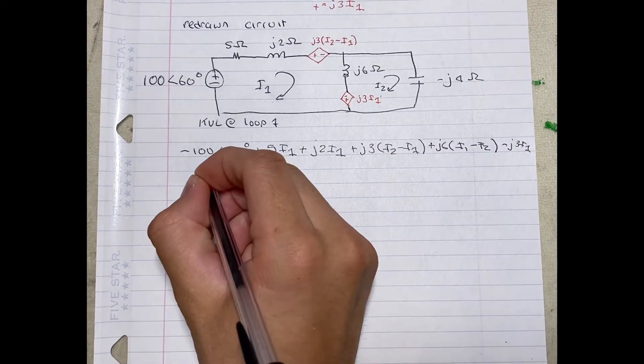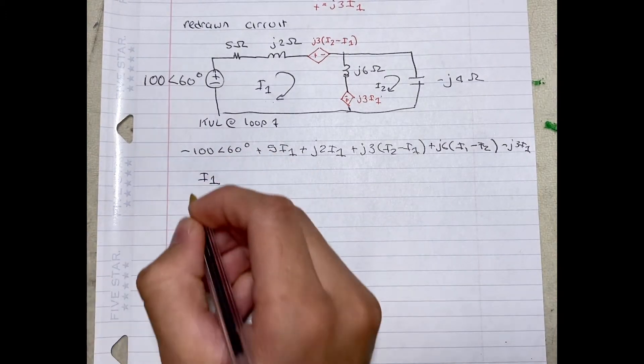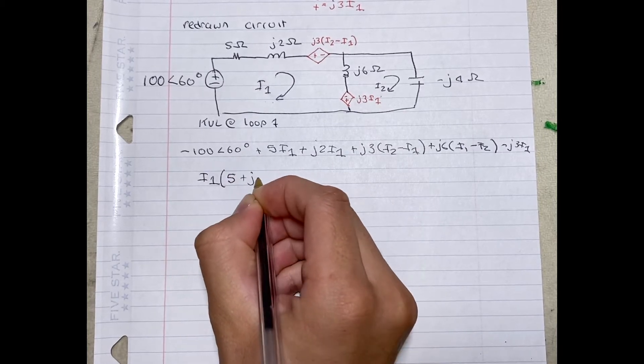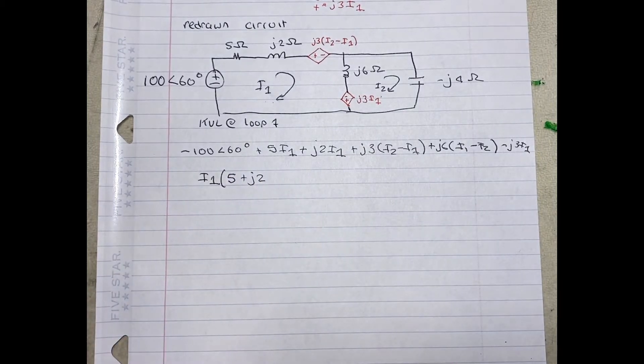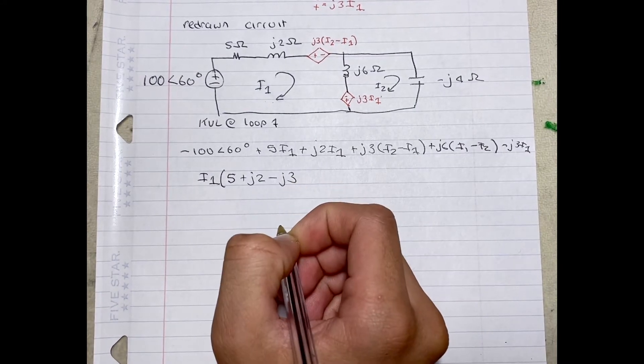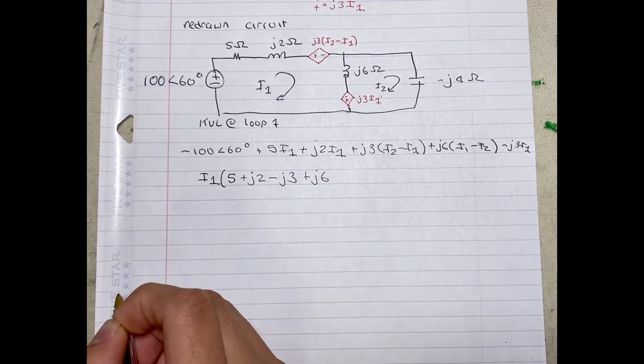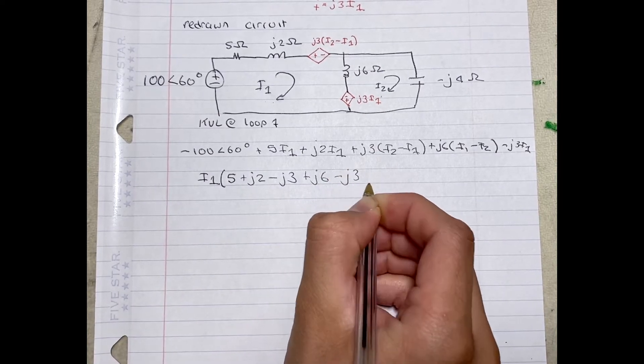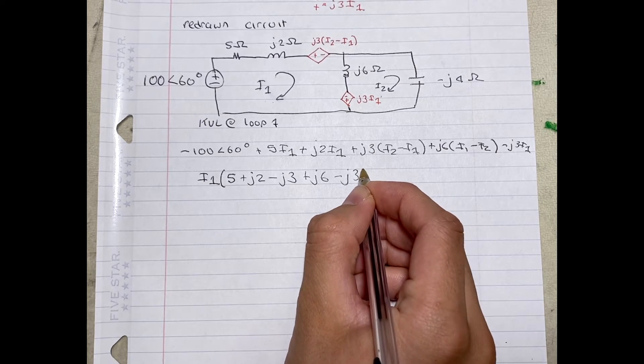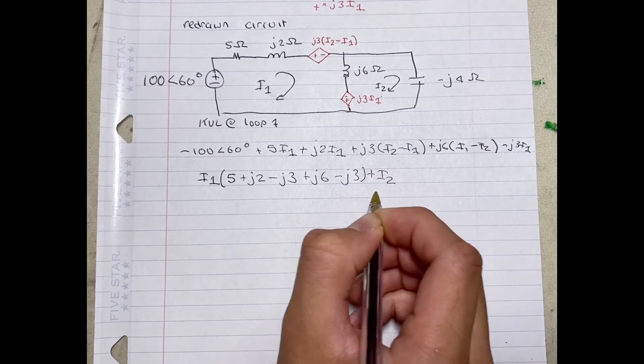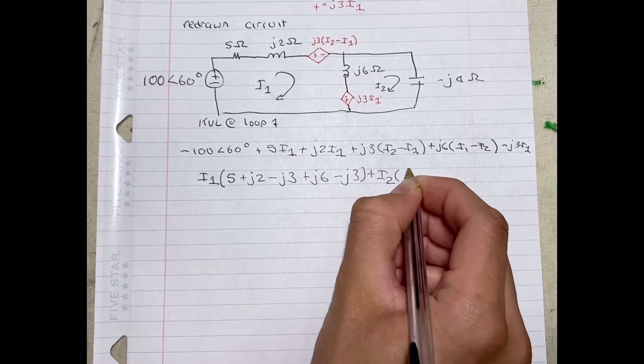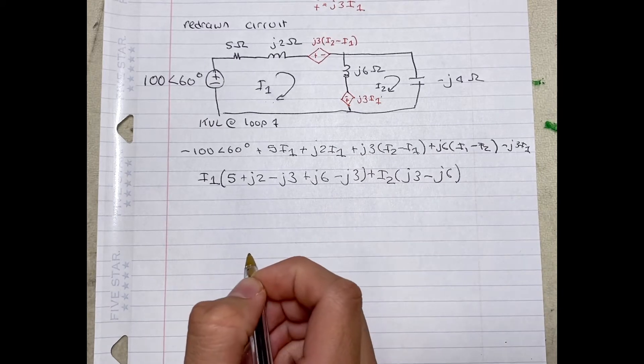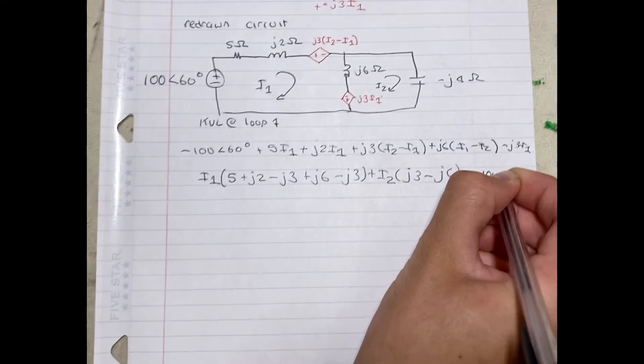Now we can simplify this. We're going to get I1 times 5 plus J2 minus J3 plus J6 minus J3, plus I2 times J3 minus J6. This is all going to be equal to 100 angle 60 degrees.